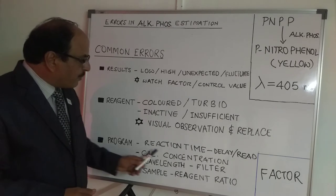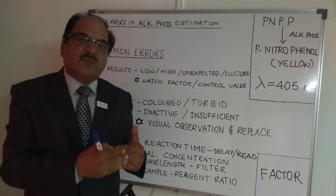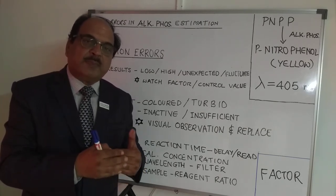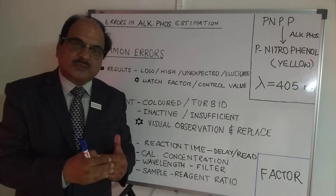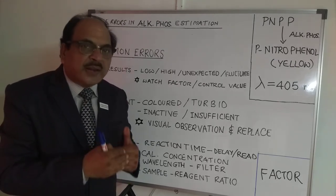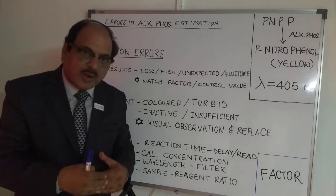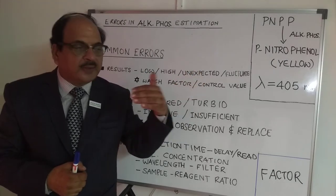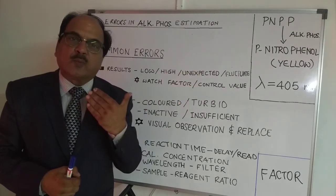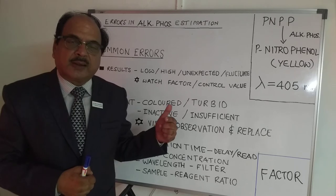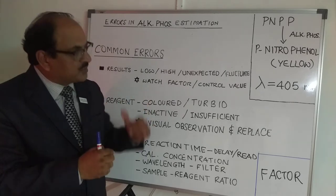One of the most important areas is calibrator concentration. Alkaline phosphatase has many times been given as a fixed factor, but many people use a multi-calibrator. The multi-cal value is lot-specific and method-specific. Very commonly, one tends to forget to update the value in the program when a new lot is used — the previous lot values are continued, resulting in a wrong factor and wrong results. Ensure that the vial's value matches what is entered in the program.